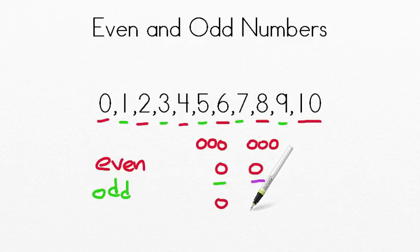If we had 3, well, here's 1, here's 2, here's 3. If I take 1 and you take 1, there's 1 left over. It won't be equal. It won't be fair. There's always 1 left over.